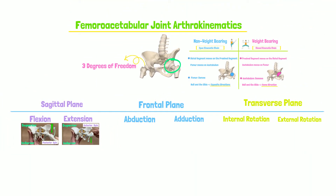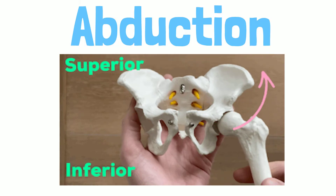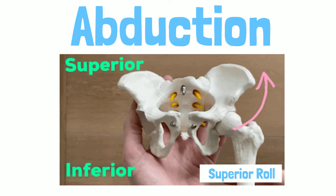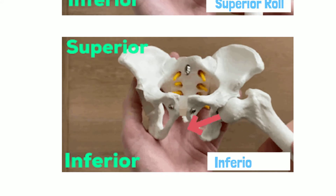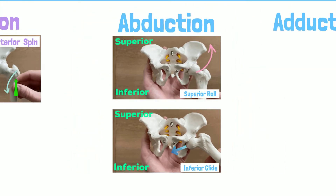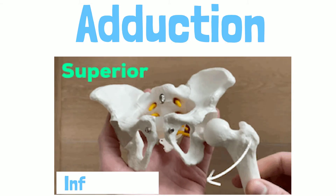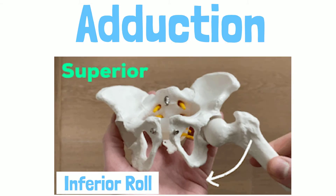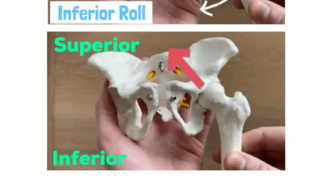Now, the frontal plane. During femoroacetabular abduction, the femur rolls superior and glides inferior. During femoroacetabular adduction, the femur rolls inferior and glides superior.